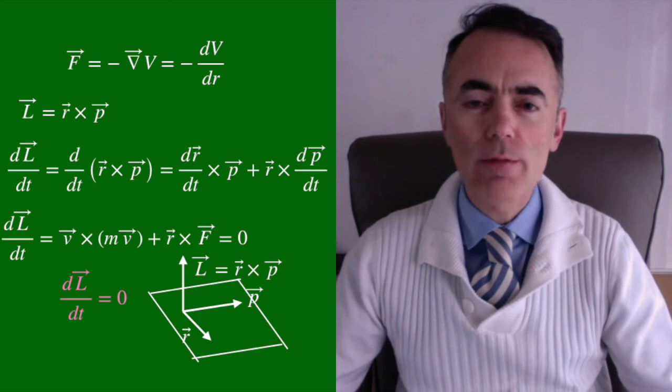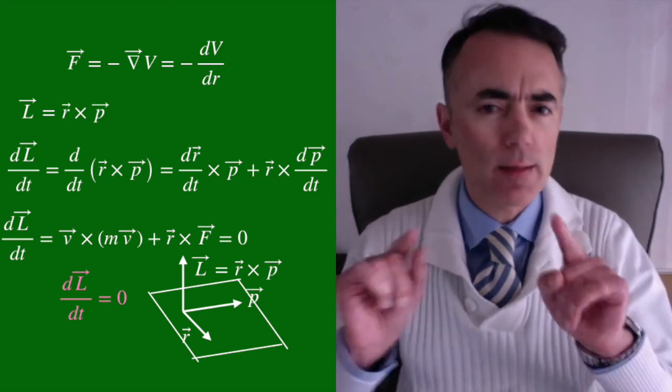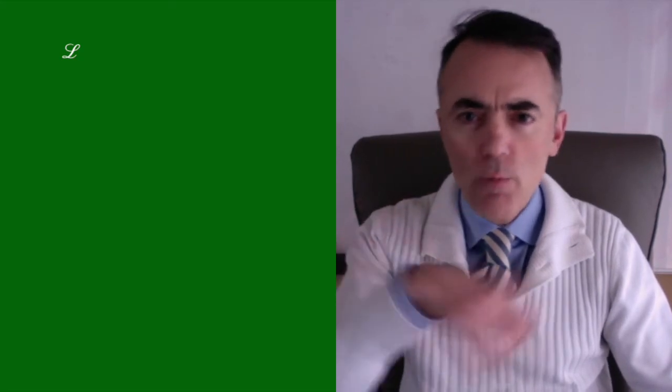Because the potential only depends on the distance r, I will write the Lagrangian in polar coordinates. This curly L will refer to the Lagrangian to differentiate it from the angular momentum regular L.